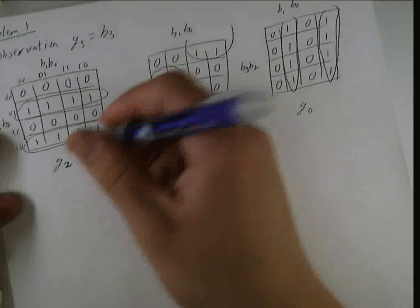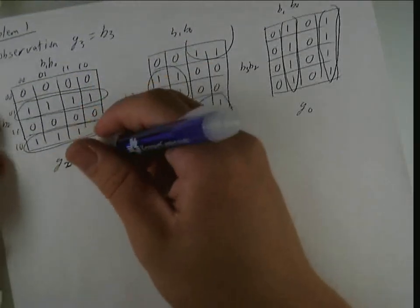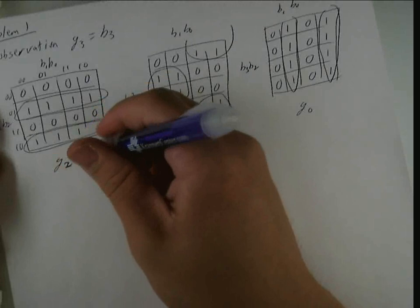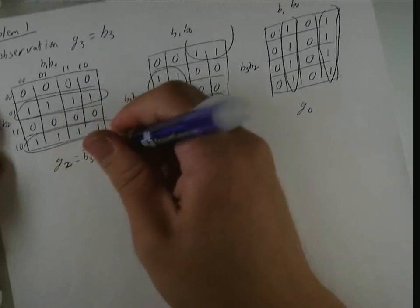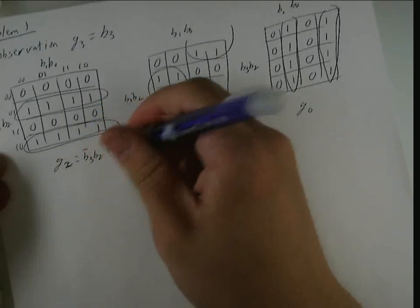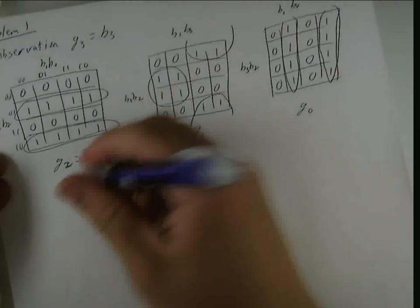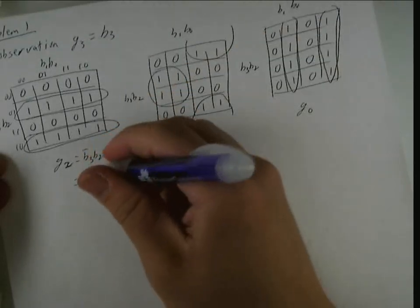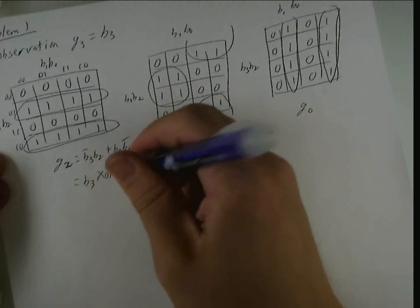So let's just kind of look at the answer. I've got this is B3 bar, B2, or B3, B2 bar. And check it out. So I've got B3 XOR B2.